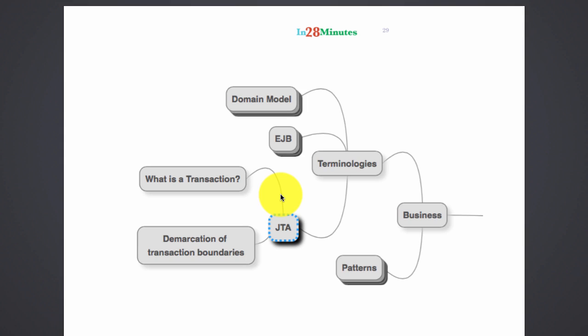The amount was removed from my account—100 rupees, 100 dollars, 100 euros, whatever you want. But while putting the amount into my friend's account, there was a problem. What should the system do?